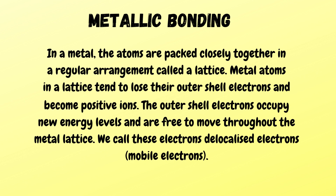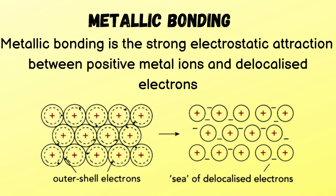Next comes metallic bonding. In a metal, atoms are packed closely together in a regular arrangement called a lattice. Metal atoms in a lattice tend to lose their outer shell electrons and become positive ions. The outer shell electrons are free to move throughout the metal lattice — we call these delocalized or mobile electrons. Metallic bonding is the strong electrostatic attraction between positive metal ions and these delocalized electrons.